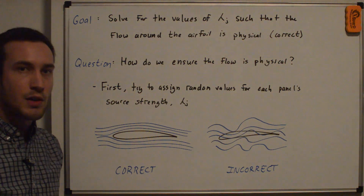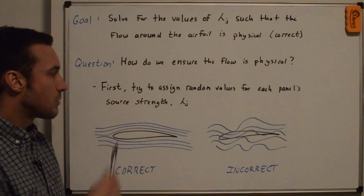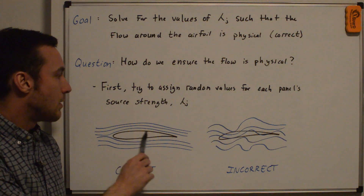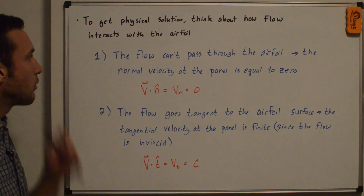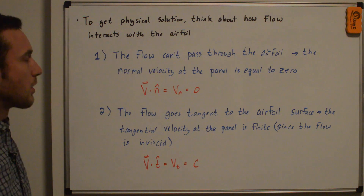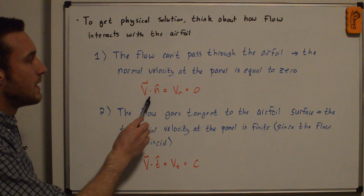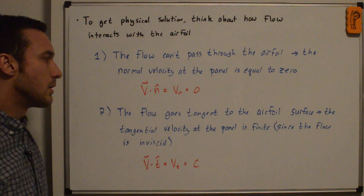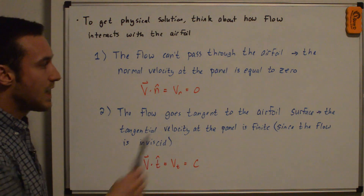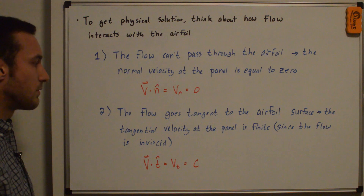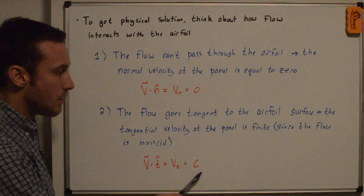You can't have a flow passing through a solid object, ignoring suction or blowing. The correct solution has streamlines passing smoothly around the airfoil, essentially parallel to the airfoil body. To get a physical solution, the flow cannot pass through the airfoil — the normal velocity at the panel is equal to zero, written mathematically as the velocity vector dotted with the panel normal vector equals zero. The flow goes tangent to the airfoil surface, so the tangential velocity at the panel is finite since the flow is inviscid.